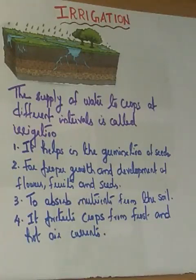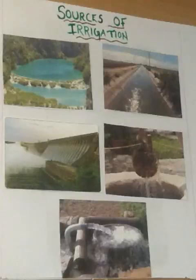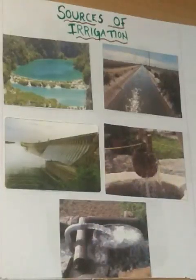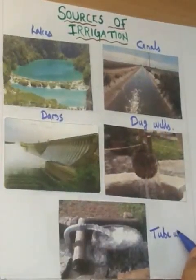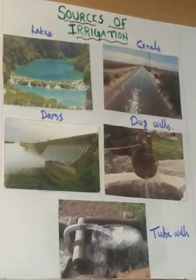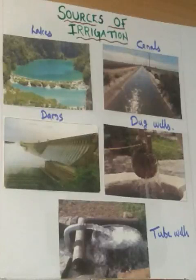Next we discuss about sources of irrigation — from where we are getting water. Some important sources of irrigation are lakes, canals, dams, dug wells, and tube wells. All these sources get water mainly from the rain.